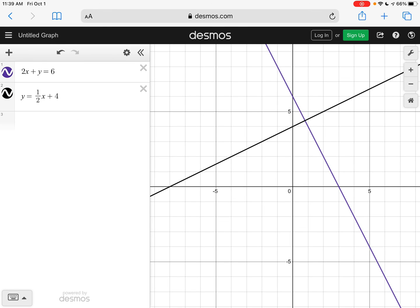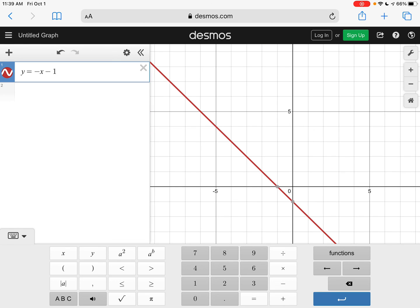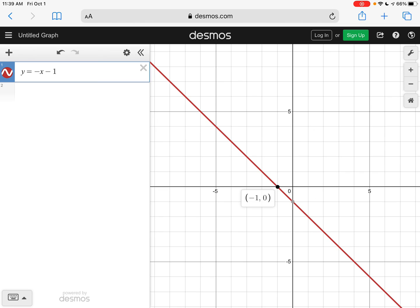And you could keep going on and on forever. The next one that we did was y equals negative x minus one. If it's too many things on the screen you can just hit the x's and get them off. Here you can see your x-intercept is negative one and your y-intercept is negative one.